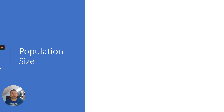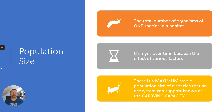As a quick reminder: a population is the total number of organisms of one species in a habitat. This changes over time due to the effect of various factors, including abiotic and biotic factors. There is a maximum stable population size of a species that an ecosystem can support, known as the carrying capacity.